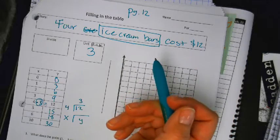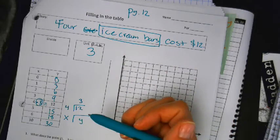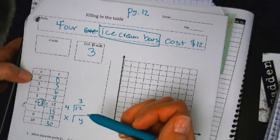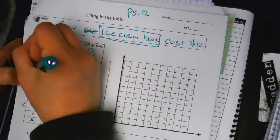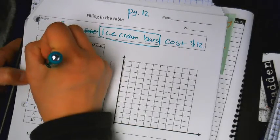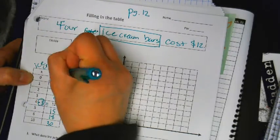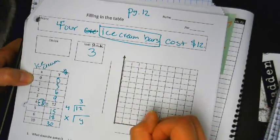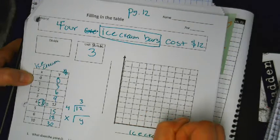You have to write $12 now. So what does X represent? Ice cream. And Y represents money. So now I can label this.